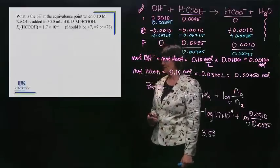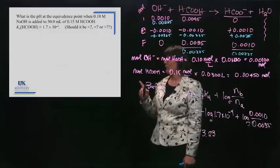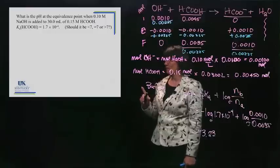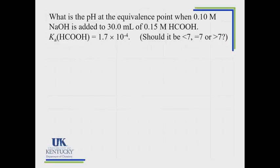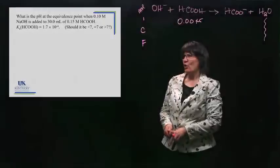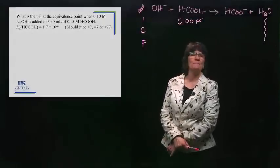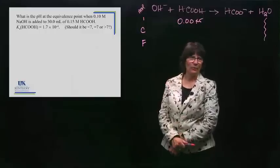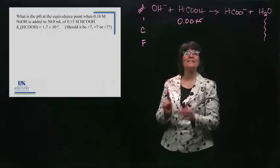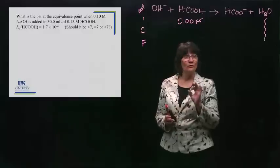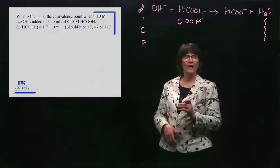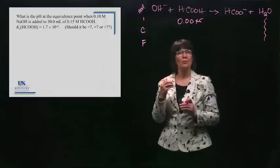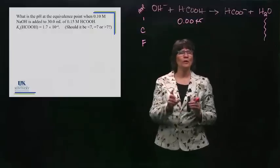What's next? We're going to do one that's at the equivalence point. When it is at the equivalence point, it is the most lengthy problem to do. Most exams will have at least one of these, so be prepared. There are multiple equilibria to consider. We have a strong base and a weak acid, so at the equivalence point would you expect the pH to be less than 7, equal to 7, or greater than 7?